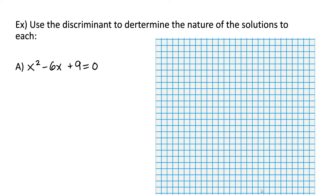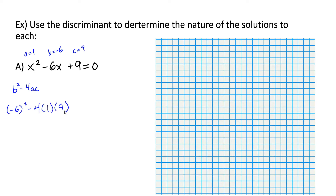So we'll look at some examples. Use the discriminant to determine the nature of the solutions to each. Here we have x squared minus 6x plus 9 is equal to zero. Our discriminant is b squared minus 4ac. We see a is equal to 1, b is equal to negative 6, c is equal to 9. Plugging everything in, we get negative 6 squared minus 4 times 1 times 9, which gives us 36 minus 36, equal to zero. So this means there's going to be one real solution.